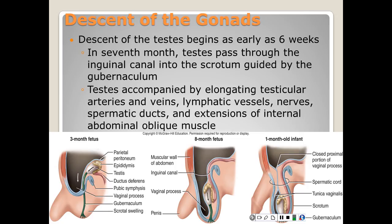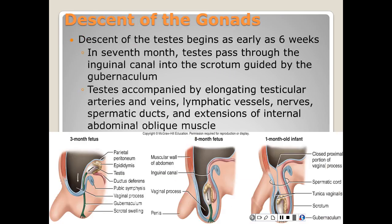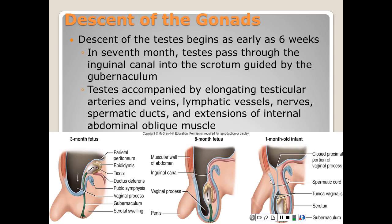As the testes descend, they are accompanied by elongating testicular arteries and veins, lymphatic vessels, nerves, spermatic ducts, and extensions of the internal abdominal oblique muscle. The vaginal process becomes separated from the peritoneal cavity to persist as the tunica vaginalis, enfolding the anterior and lateral sides of the testes.